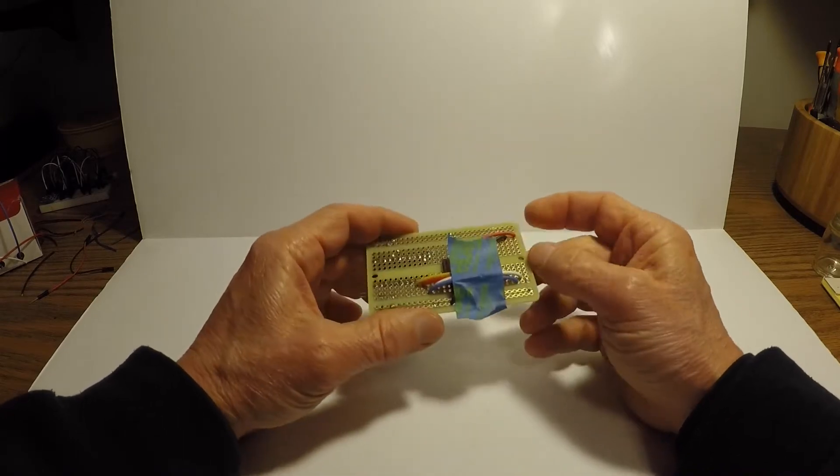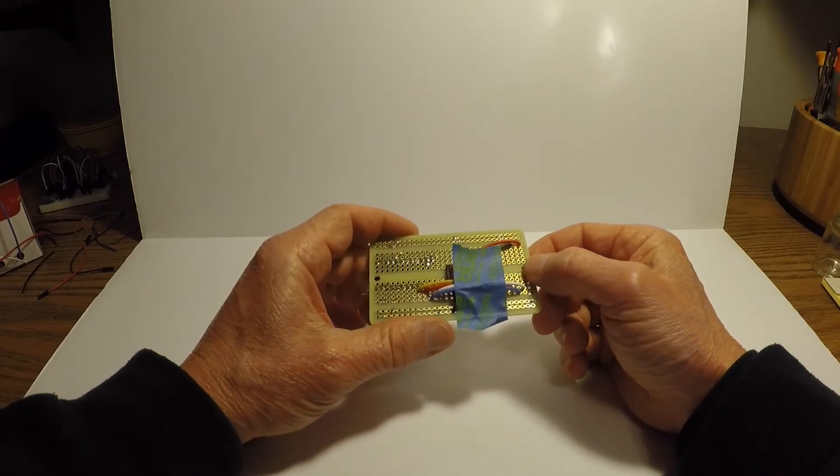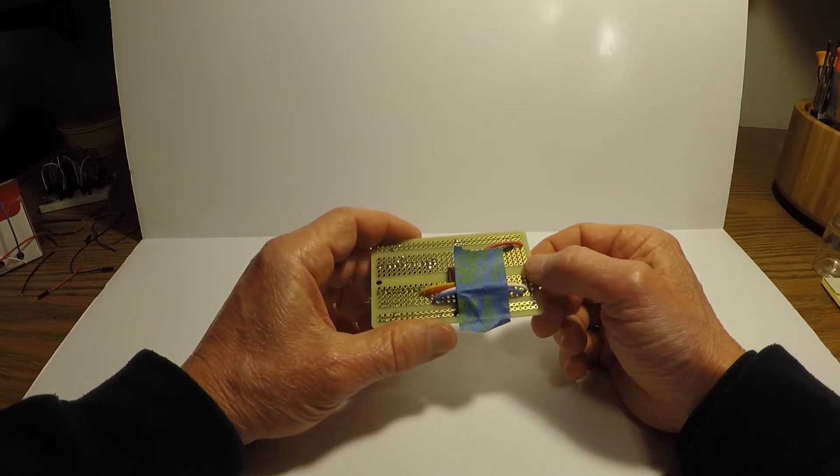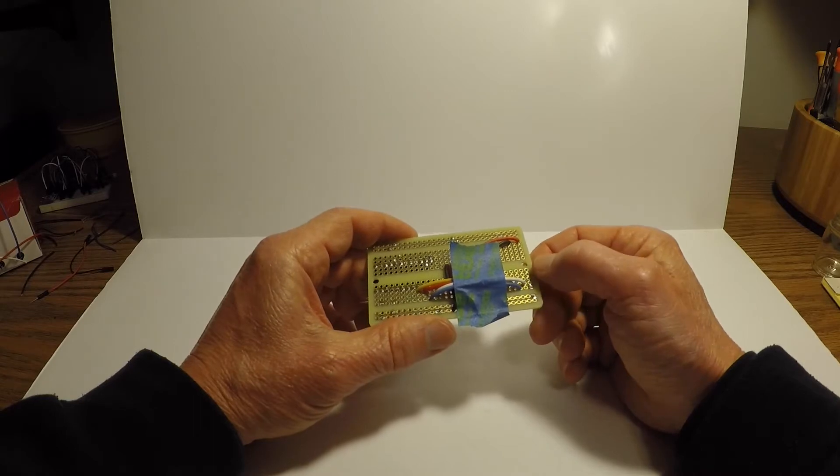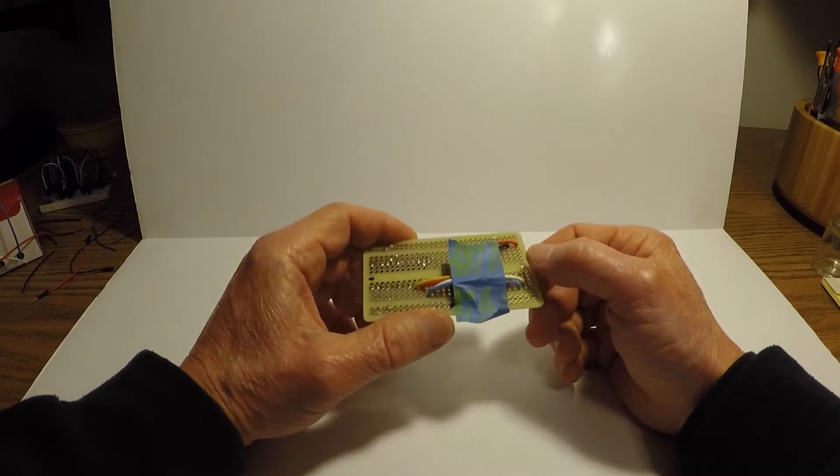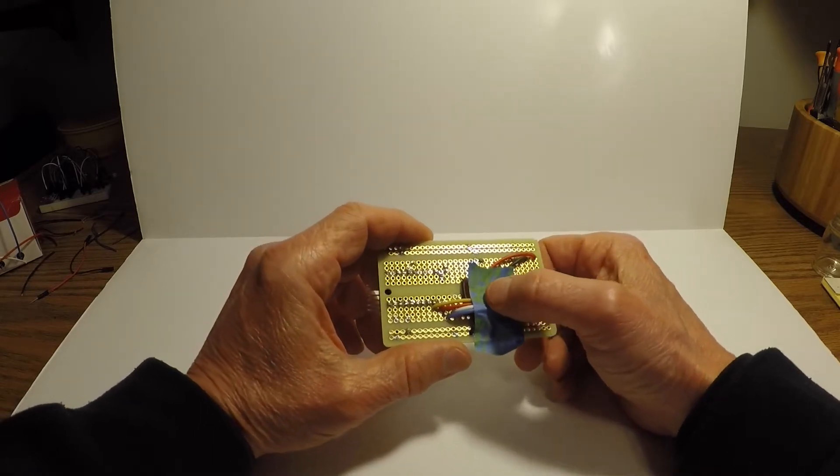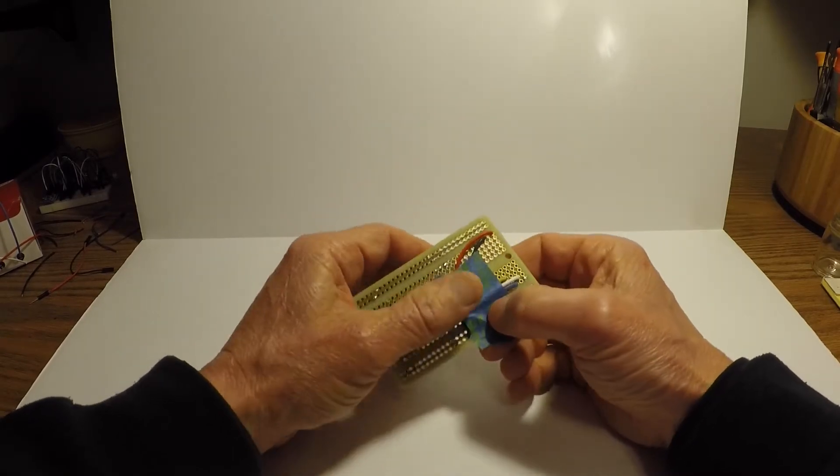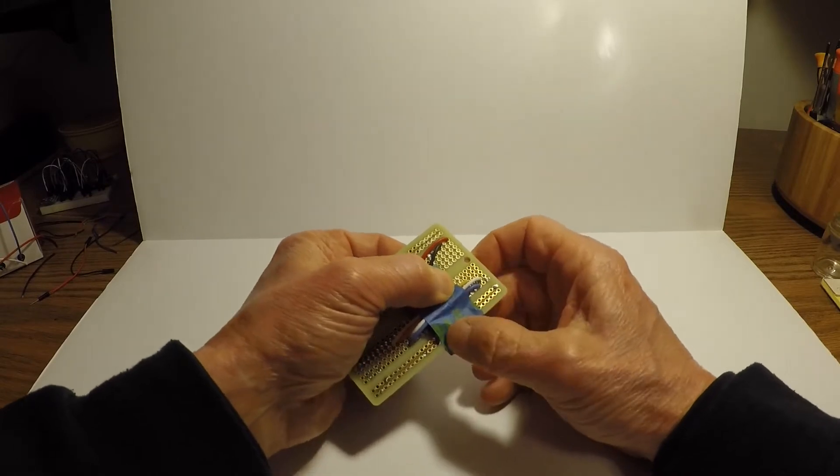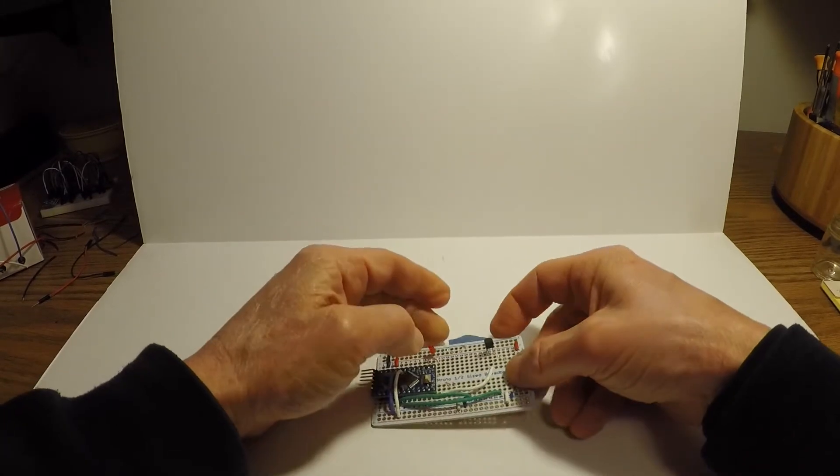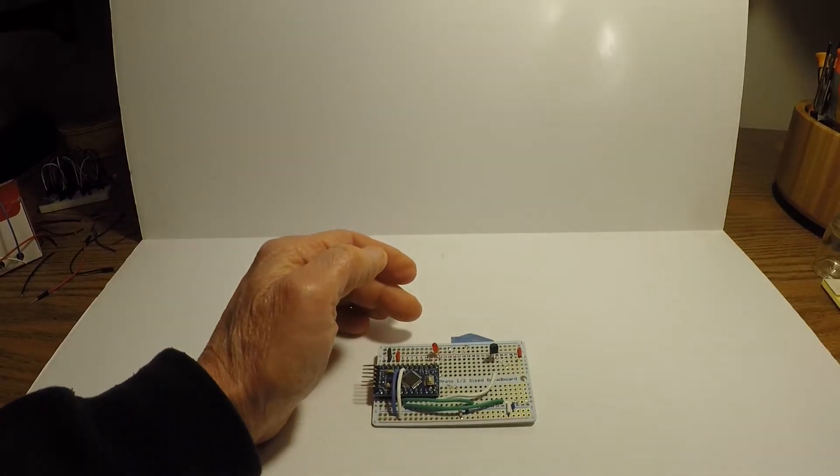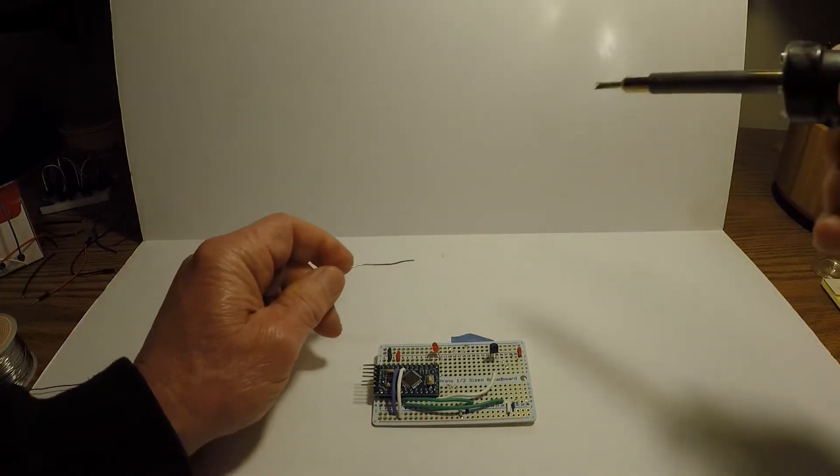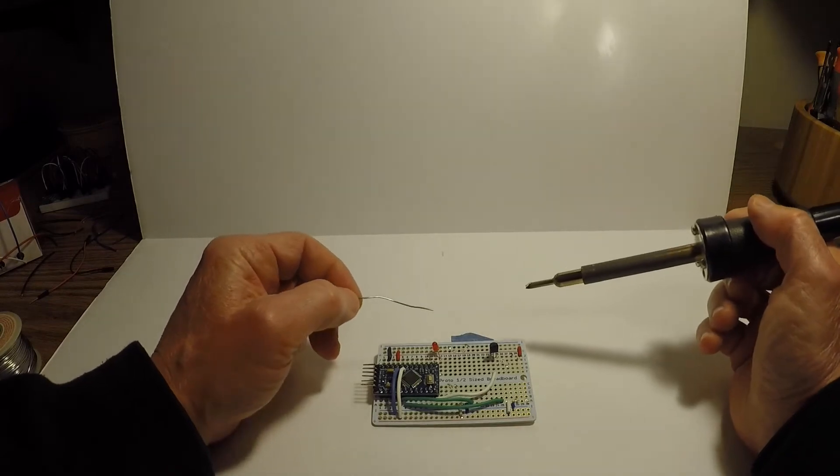So I went ahead off camera and cut, stripped, and tinned the eight wires for the back side. I've soldered six of them, with only the white and blue wires left to go. Even on time lapse, soldering and tinning a bunch of wire can get pretty old.